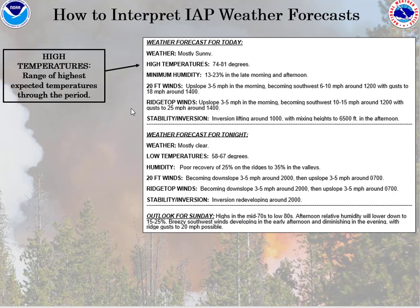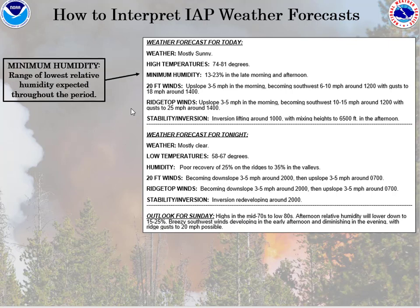Next we have the high temperatures, which shows a range of the highest expected temperatures through the period. The higher the temperature is, the closer an object will get to ignition. Next up is the relative humidity — specifically the minimum humidity, which is a range of the lowest relative humidity expected through the period. The lower the relative humidity is, the easier a fire will burn.